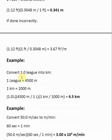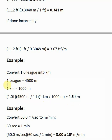Here's another example: converting leagues into meters. This takes it up a step. Most of the time in chemistry, you take one unit, multiply by a conversion factor, and get another unit. But sometimes you need to multiply by more than one conversion factor to get from your given unit to your desired unit. Here I'm asked to convert one league into kilometers. I don't have a direct conversion factor from leagues to kilometers, but I know that one league equals 4,500 meters, and one kilometer equals 1,000 meters, so I'll use both conversion factors.